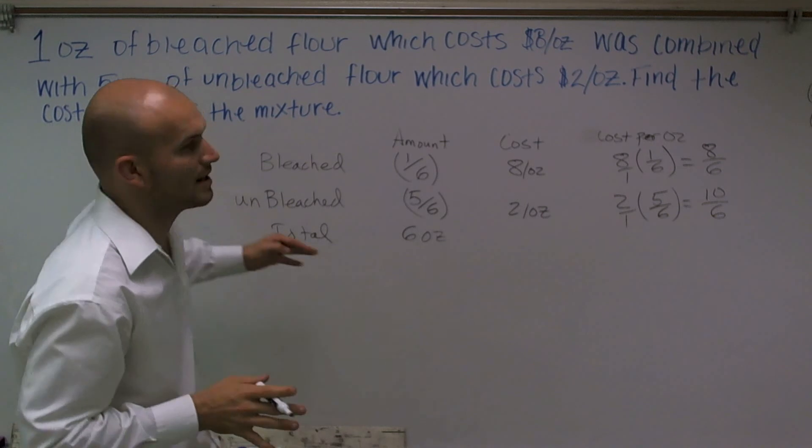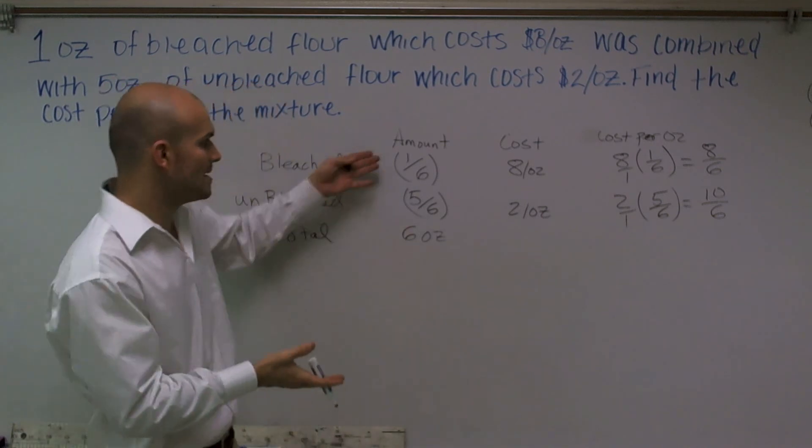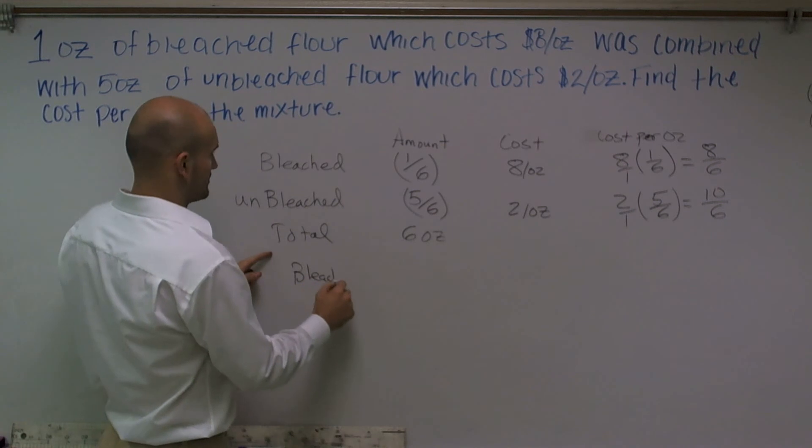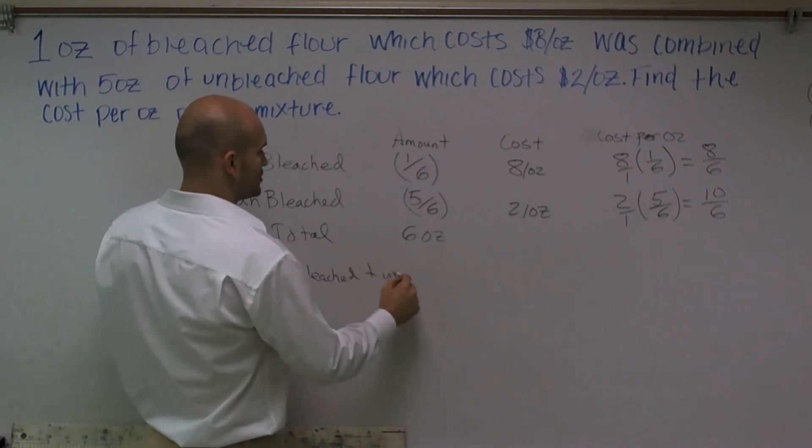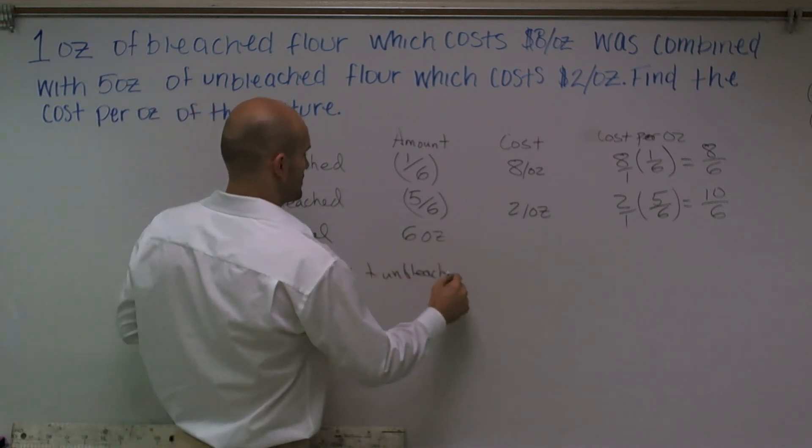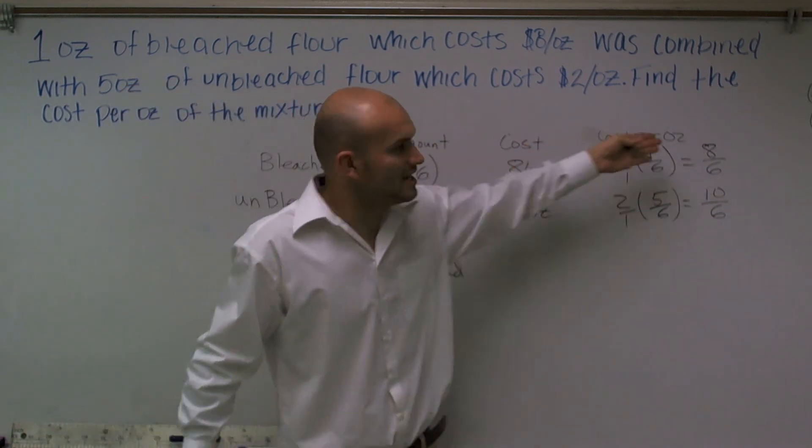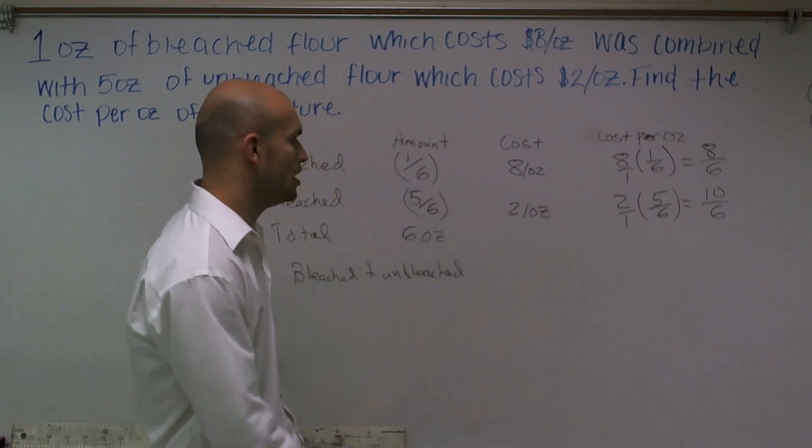Well, it says it wants us to find the cost per ounce of the mixture. So that means, remember, both of these added up: your bleached plus your unbleached. So we need to combine these. So what I'm going to do is I'm going to take the cost per ounce of the bleach and add it to the cost per ounce of the unbleached.